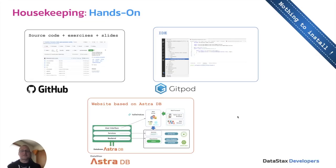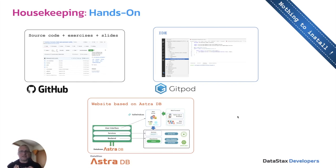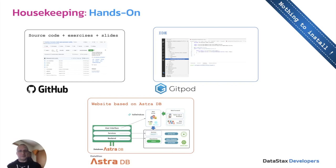Some quick housekeeping: first of all there's nothing to install. We're going to be working out of a GitHub repository today that's also integrated with Gitpod, and the nice thing about that is Gitpod will fire up as an IDE and basically run everything right in your browser. The application and website we're going to build is going to be sitting on top of DataStax AstroDB, which is our version of Cassandra as a service that we support out in the cloud.